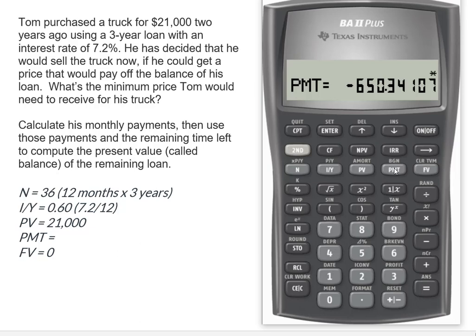So the original term of the note was 36 monthly payments of $650.34. Hang on to that $650.34 figure because we're going to need it in order to calculate the outstanding loan balance.